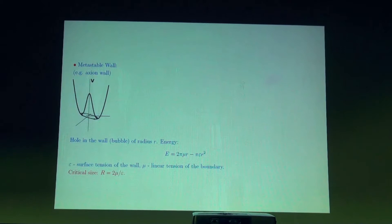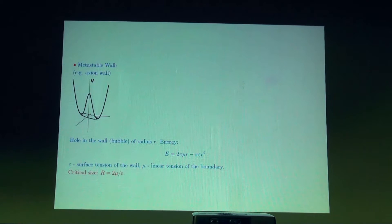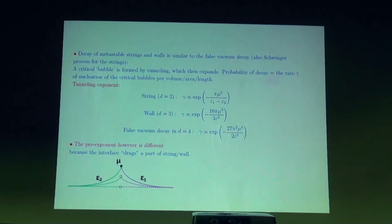A similar situation can be considered for a metastable wall. Instead of a stream, you have a wall — for example, a wall with a film having surface energy epsilon — which can break. The breakup is prevented by the fact that the hole in the wall has energy associated with the length of its boundary, proportional to the length with proportionality constant mu (the linear tension of the boundary), and epsilon is the surface tension of the wall. These are lower-dimensional objects living in normal four-dimensional space.